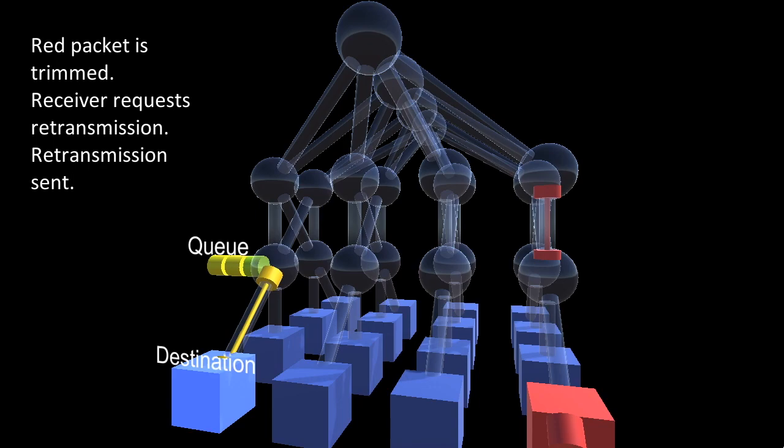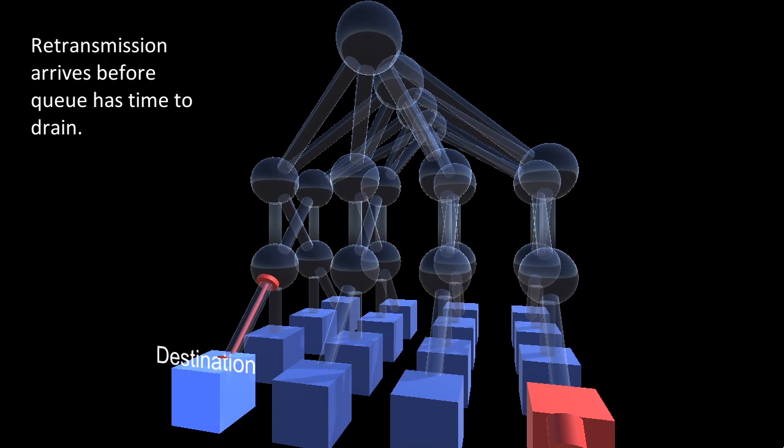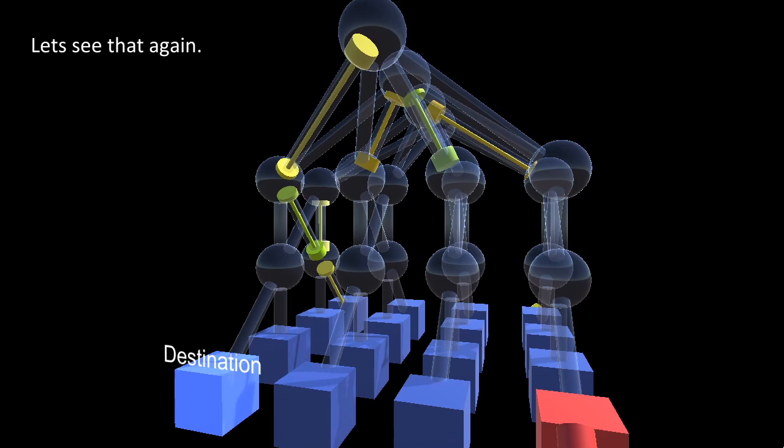It gets trimmed, priority forwarded, NACKed, and resent really quickly. So quickly, in fact, they arrive before the preceding queues even have a chance to drain. That was a bit quick. Let's see it all again.